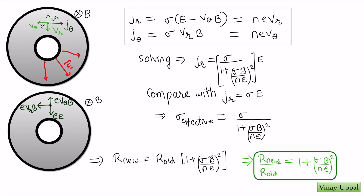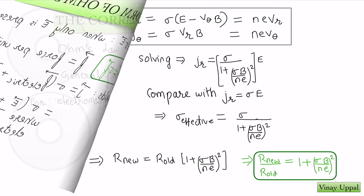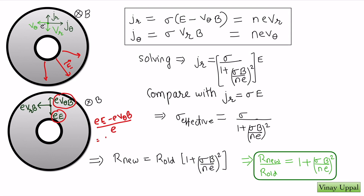My aim is to express Jr completely in terms of the electric field. I will write down all the equations I can. In the radial direction, the electrons are traveling inwards. The net force in the radial direction on the electron is eE minus eVθB. Dividing by e to get force per unit charge, the net force per unit charge in the radial direction is E minus VθB.